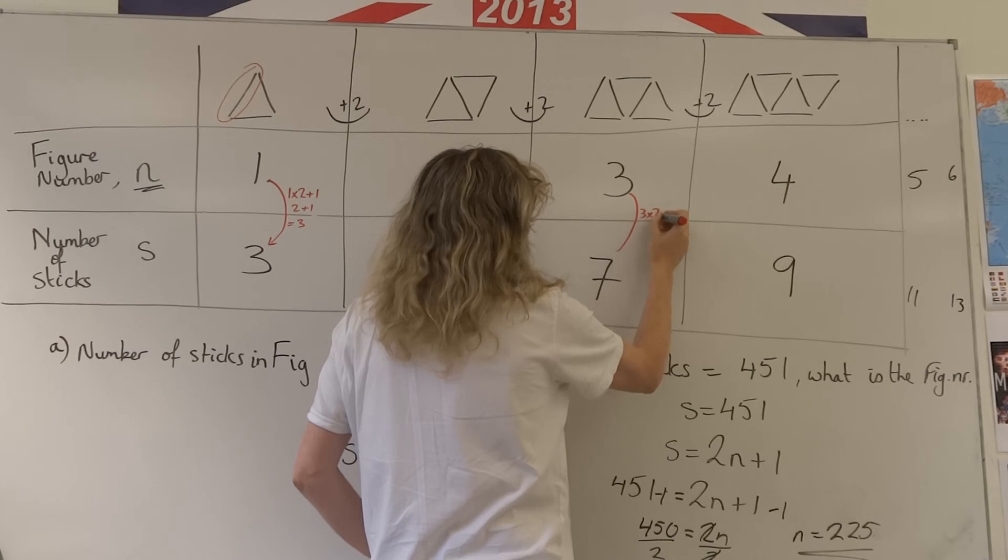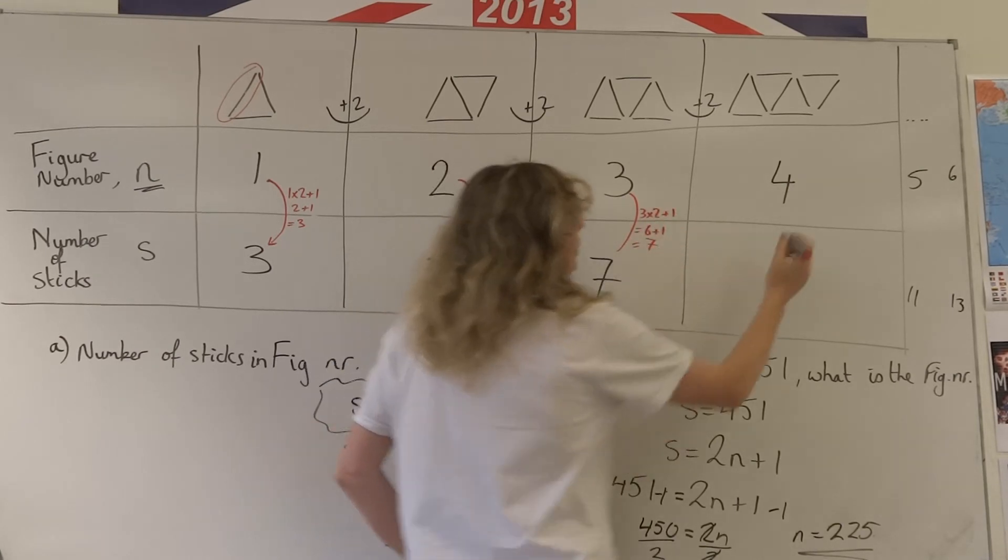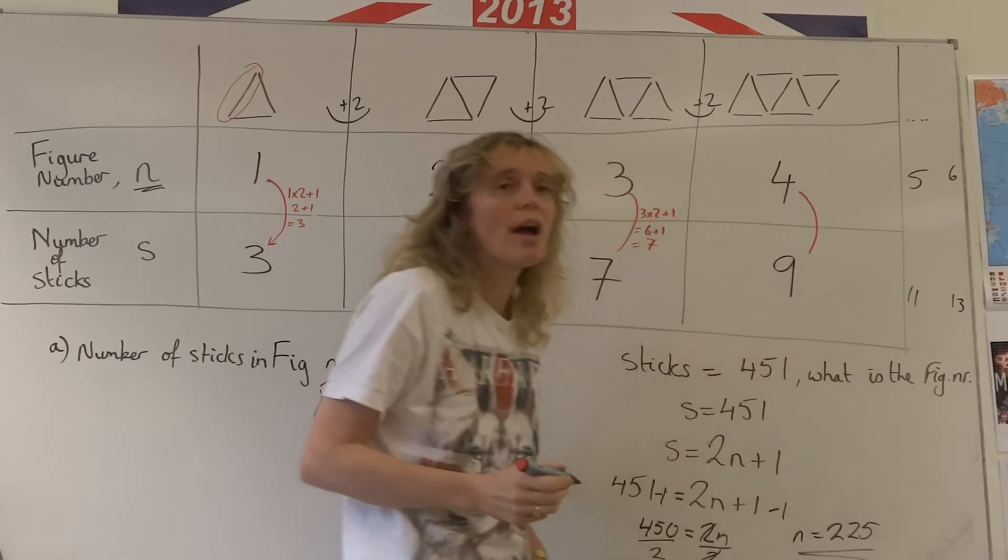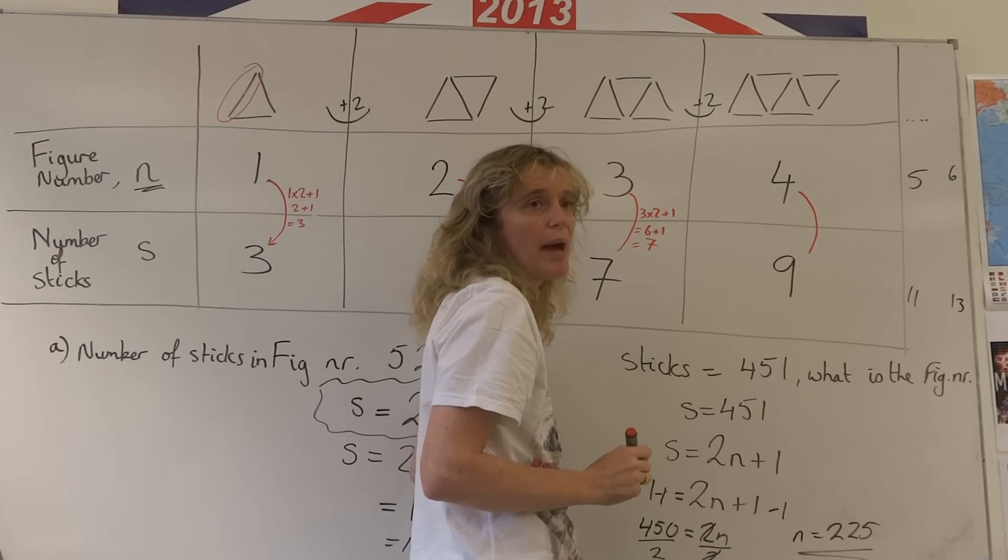Three times two plus one giving us six plus one equals seven. So we can always check that we've got the right formula because if it's the right formula it will always work when we plug it back into here.